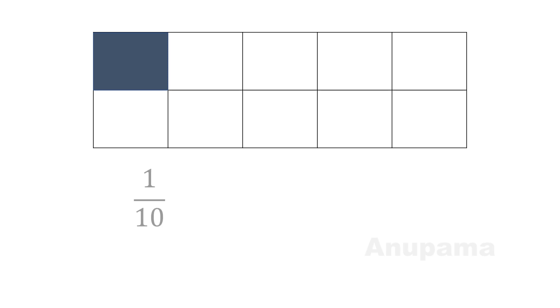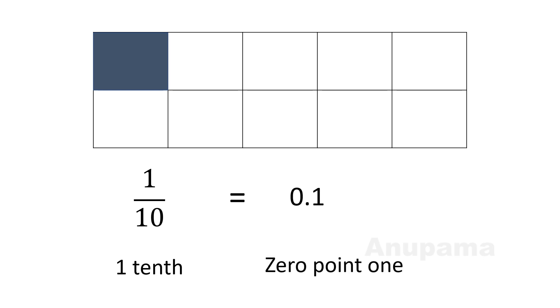Here is a figure. The total number of parts in this rectangle are 10. Let us shade a few parts. I have shaded one part here. So what is the fraction? The fraction is 1 by 10, and we can say it is 1 tenth. In the form of decimals, we can write it as 0.1, and we read it as 0.1. So we can say a decimal is another way to express a fraction.